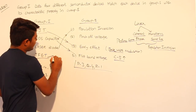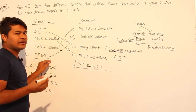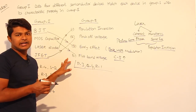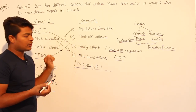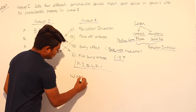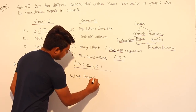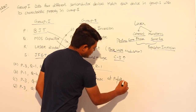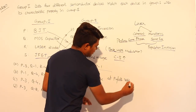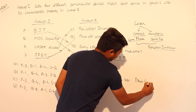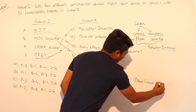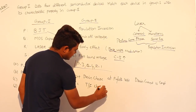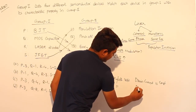Now, J-FET. J-FET is related to pinch-off voltage. With respect to drain characteristics, at pinch-off voltage, the drain current is zero. At pinch-off voltage, drain current becomes constant. Similarly, with respect to transfer characteristics, at pinch-off voltage, drain current is zero. These are the two important conclusions when dealing with J-FET.